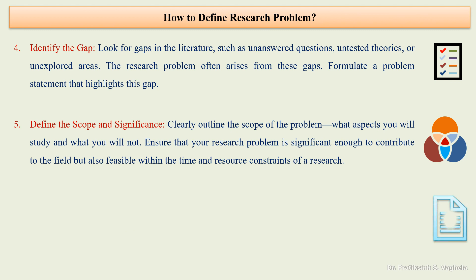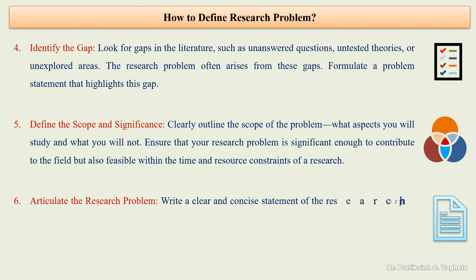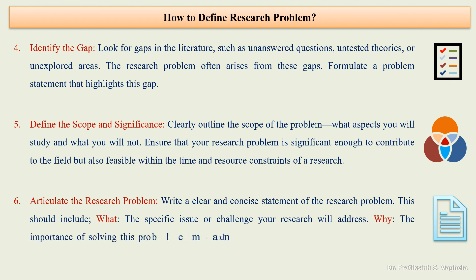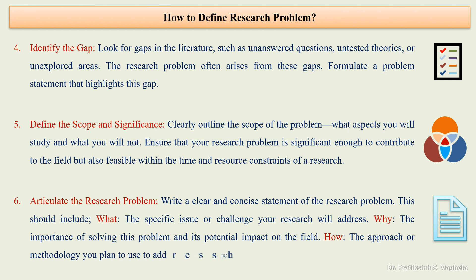The sixth step is to articulate the research problem. Write a clear and concise statement of the research problem. This should include: what — the specific issue or challenge your research will address; why — the importance of solving this problem and its potential impact on the field; and how — the approach or methodology you plan to use to address the problem.